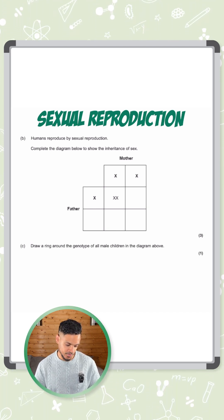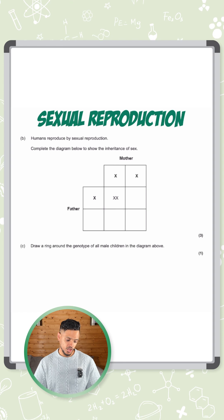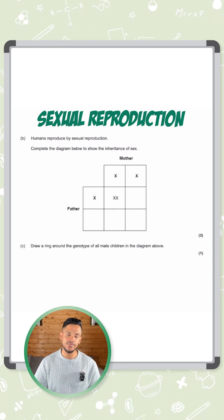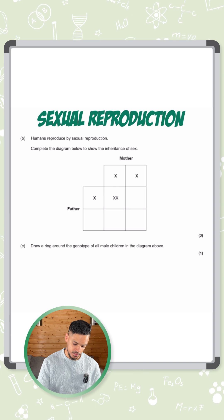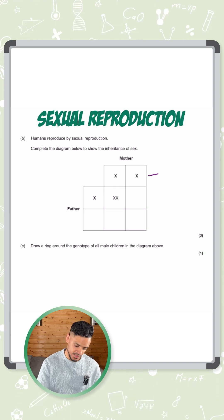This question says humans reproduce by sexual reproduction. Complete the diagram below to show the inheritance of sex. So like I said, females have an XX chromosome, so that's represented here.